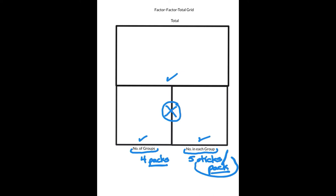It turns out that when we multiply, we almost always — and there are different kinds of multiplication situations — but in most of the ones we do with elementary students, we're using an intensive quantity, a ratio.